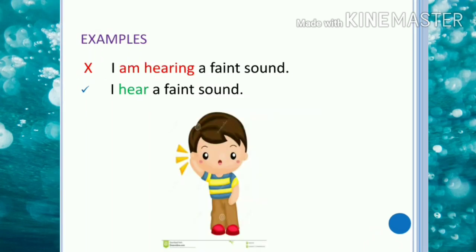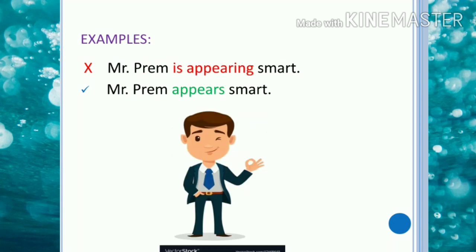'I am hearing a faint sound' is incorrect. 'Hear' is a verb of perception and we cannot use it in continuous form, so the correct usage is 'I hear a faint sound.' Similarly, 'Mr. Prem is appearing smart' is wrong because 'appear' is a verb of appearing and we have to avoid using it in continuous form. The correct usage is 'Mr. Prem appears smart.'